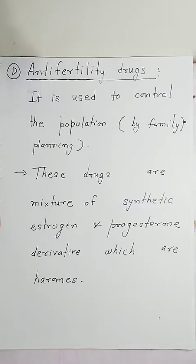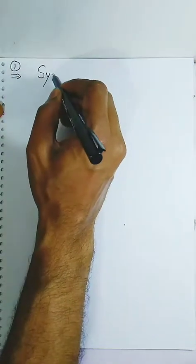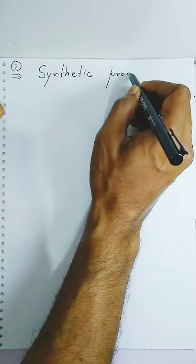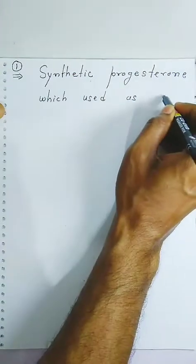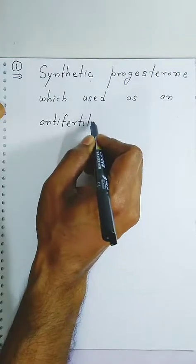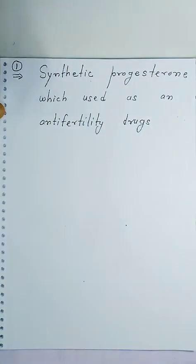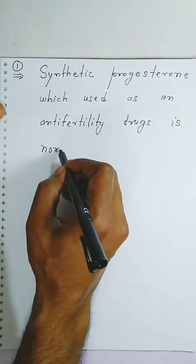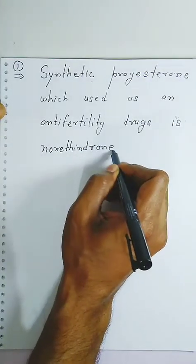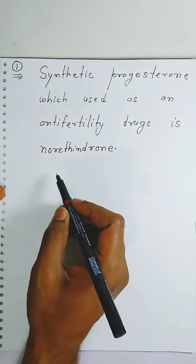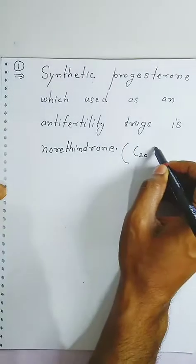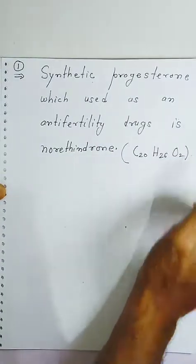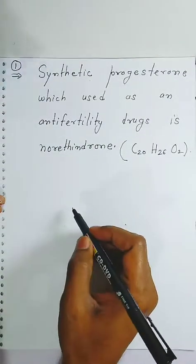Now in synthetic progesterone, we are going to see the first type — estrogen and synthetic progesterone used as anti-fertility drugs. The example we will now draw is the structure of this progesterone derivative. When you see the molecular formula, it contains carbon 20, hydrogen 26, and oxygen 2. This is also called progesterone. Because it contains C20, there will be 20 carbons total.